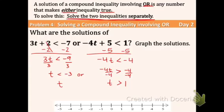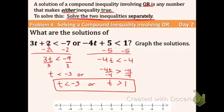So our answer is t < -3 or t > 1. Now we just need to graph it on the number line. Go to negative 3 — open circle. There's also an open circle on the 1. Remember the trick: the less than symbol points towards the left, and the greater than symbol points towards the right.